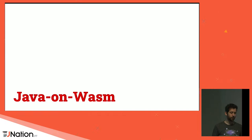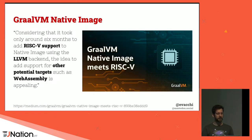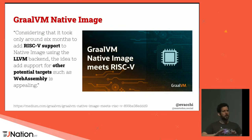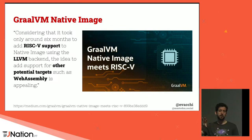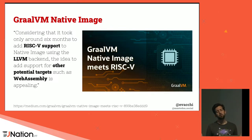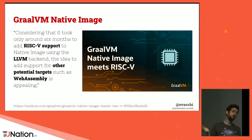Now let's look at the Java landscape on WebAssembly. GraalVM native image: there's no formal announcement, but one blog post about RISC-V support mentions they use LLVM to compile Java bytecode to LLVM IR. LLVM supports many backends, including RISC-V, and adding RISC-V support took surprisingly only about six months. WebAssembly is one of the supported compilation targets for LLVM, so maybe native image on WASM is coming. But that's not much to go on yet — stay tuned.